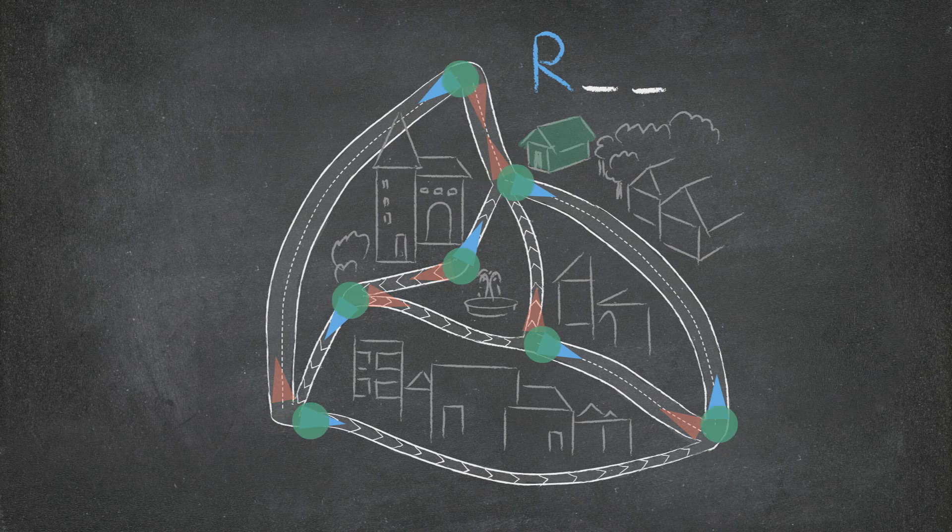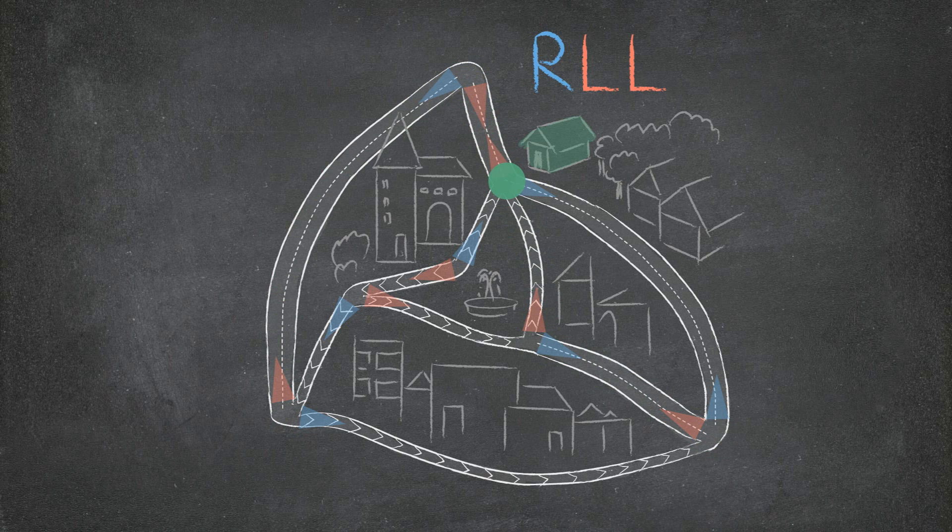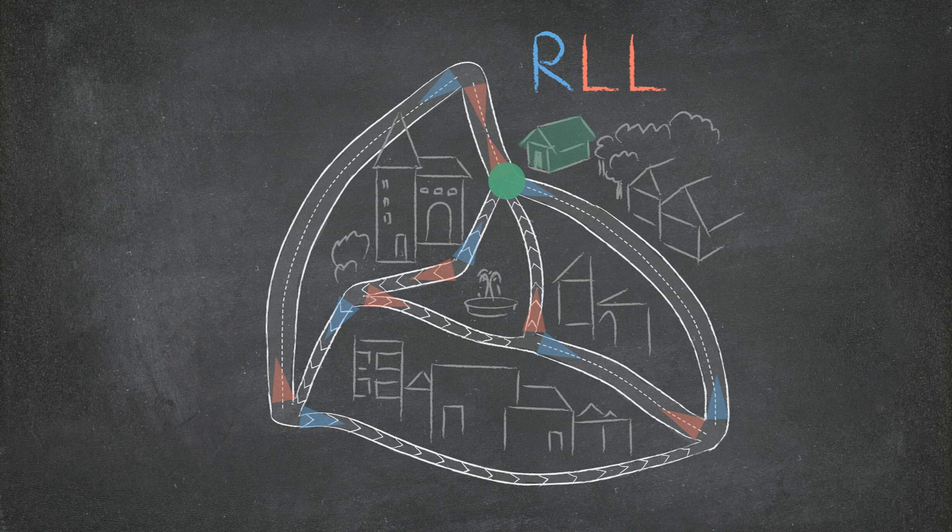The correct sequence is right, left, left. This is the only one that works from every point, and since there are only eight possibilities for the three moves, you can figure this out by just methodically checking all of them, but we'll later see more efficient ways.